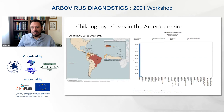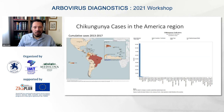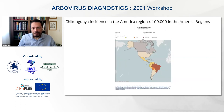In 2020, PAHO reported that the majority of chikungunya cases occurred in Brazil, followed by Bolivia, Guatemala, and Paraguay with small numbers. The incidence per 100,000 confirmed that the majority of cases were concentrated in Brazil, making it the epicenter of chikungunya in the region.